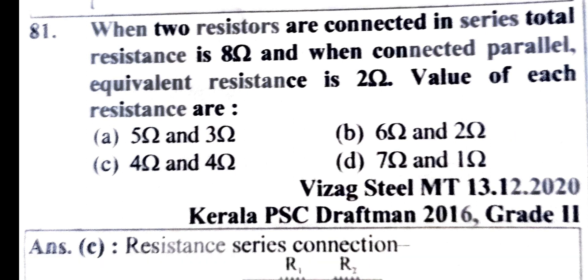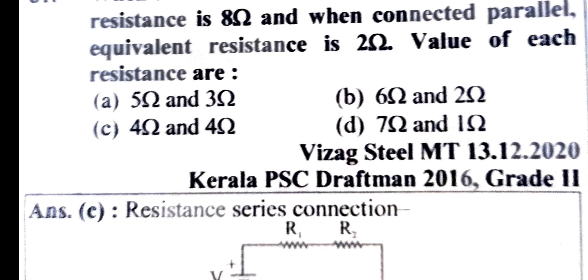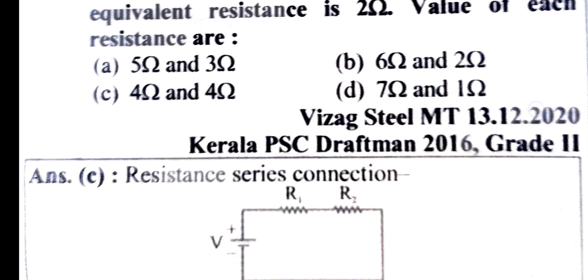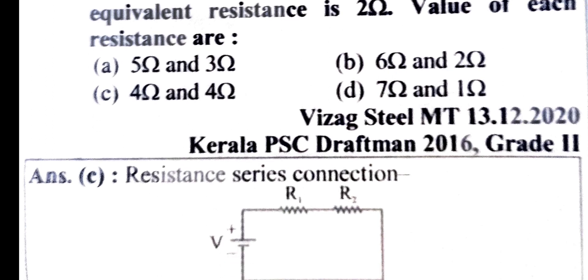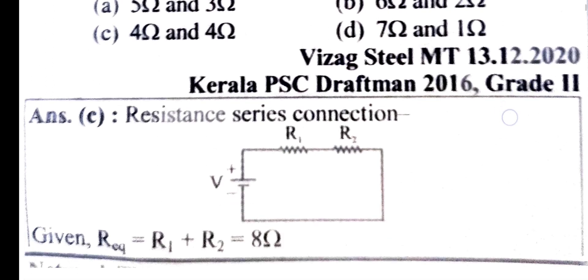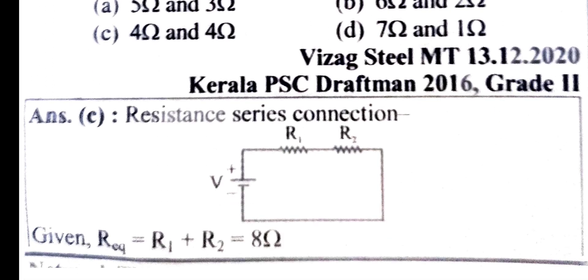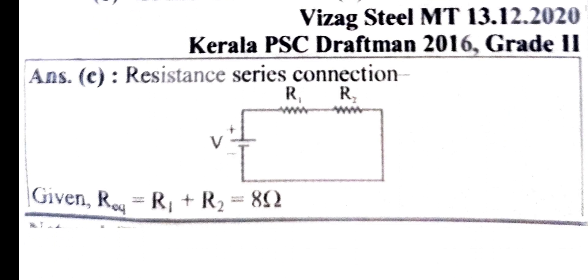When two resistors are connected in series, the total resistance is 8 ohm. When connected in parallel, the equivalent resistance is 2 ohm. We need to find the value of each resistance. In series connection, R1 plus R2 equals 8 ohm. For parallel connection, R1 times R2 divided by R1 plus R2 equals 2 ohm.